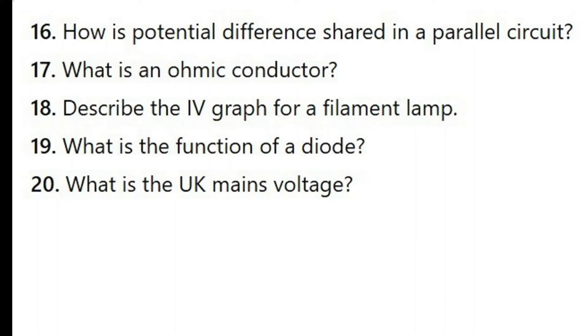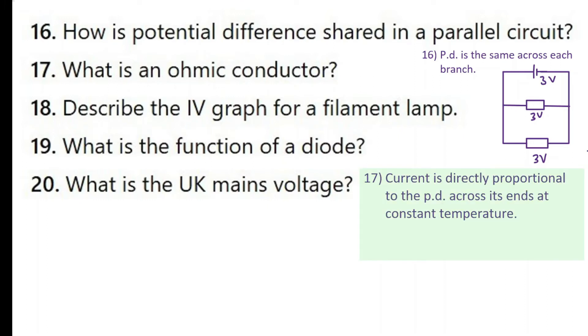So here are some more questions on electricity. Let's try these questions. How is potential difference shared in a parallel circuit? In a parallel circuit the PD across each branch is the same. So if you think about this voltage, here is three volts, then this will feel three, this will also feel the same three. So the PD is the same. What is an ohmic conductor? An ohmic conductor is something that always obeys Ohm's law, which means current is directly proportional to the PD across its ends at constant temperature. So that's what makes a conductor ohmic. And the IV graph of an ohmic conductor is a straight line through the origin like this one here.